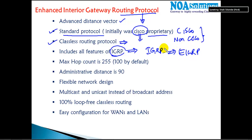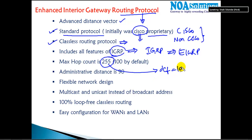A major difference is the maximum hop count: EIGRP supports up to 255 hops, and by default it supports up to 100. You can change it from 100 to 255. Unlike RIP, which supports only up to 15 hops.